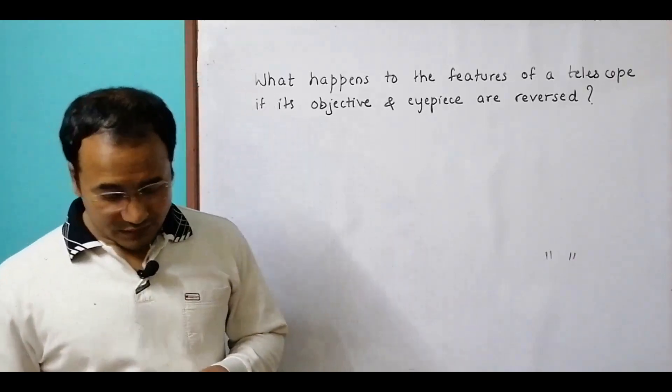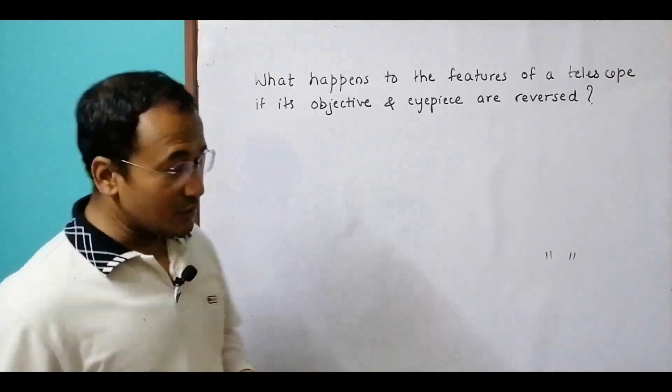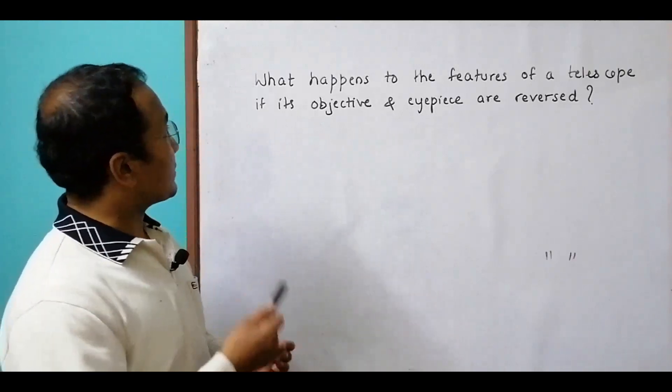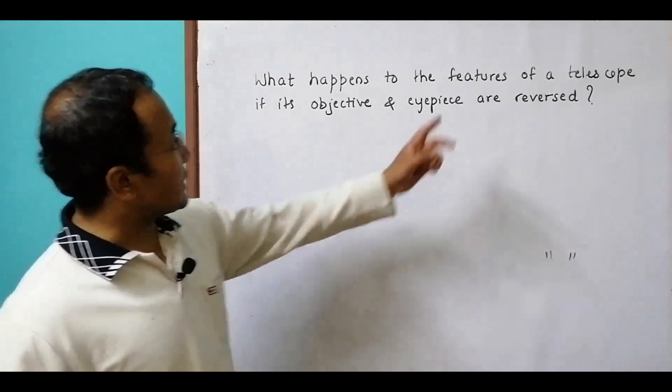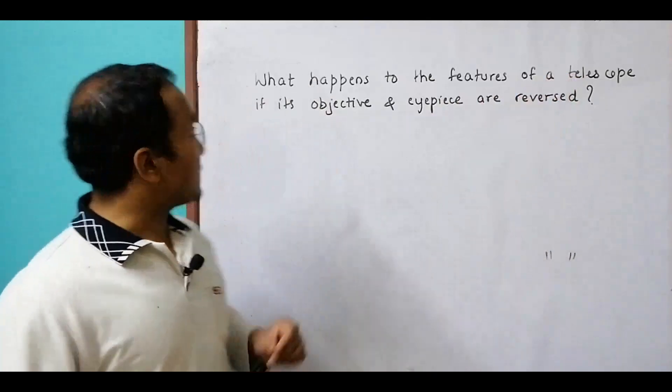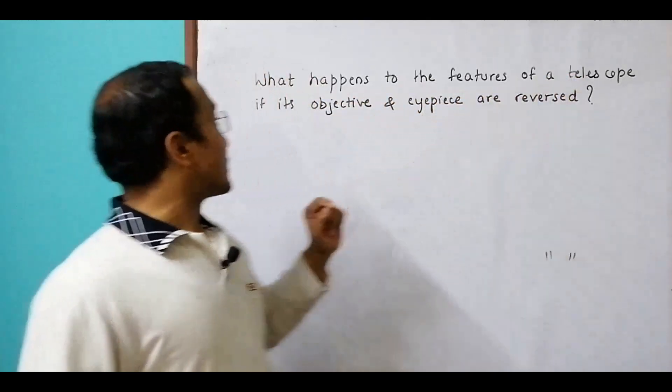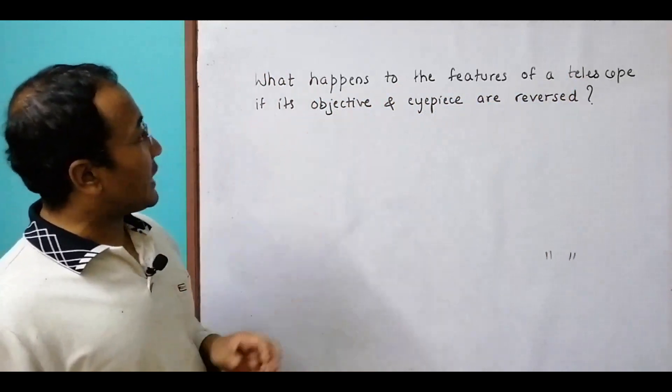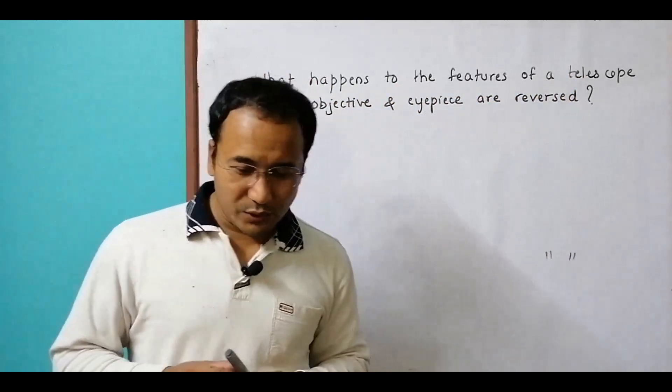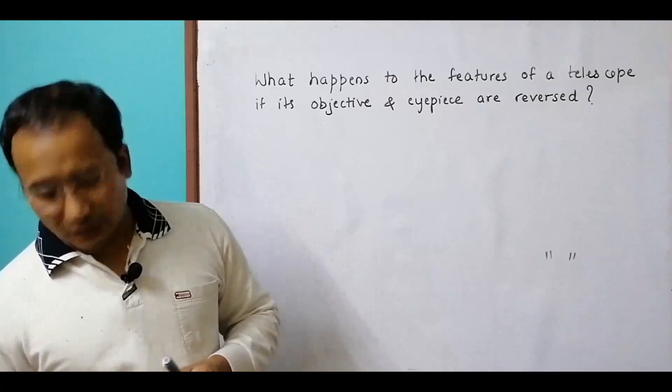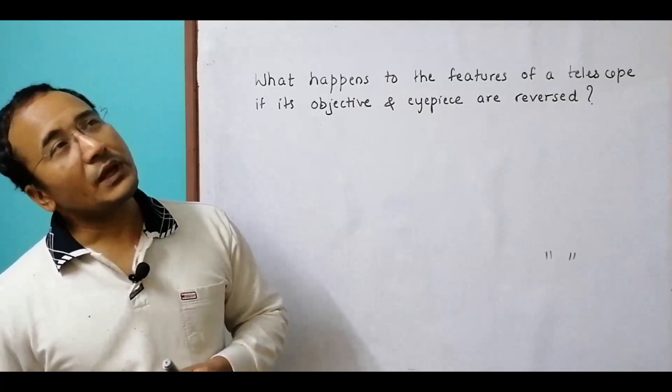Hello, today I have a question concerned with plus 2 course and it is about telescopes. It asks: what happens to the features of a telescope if its objective and eyepiece are reversed? As you know, in a telescope we have got two primary lens systems.